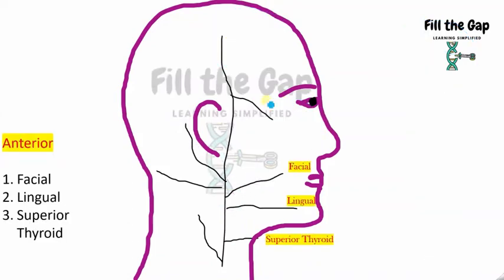Anything on the face or anterior to the neck comes in anterior. So, facial, lingual and superior thyroid, which comes in front of the neck, will come in the anterior.